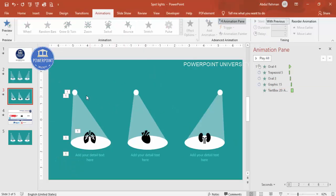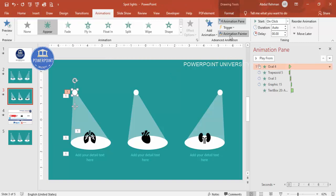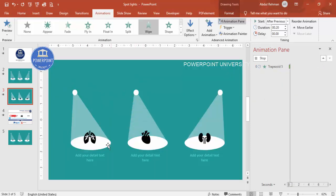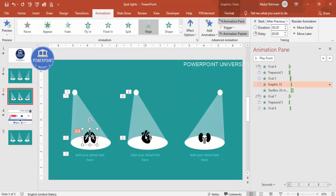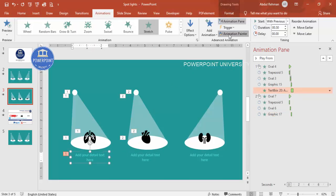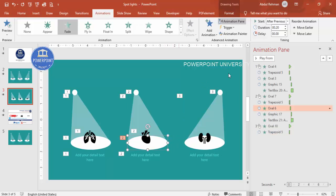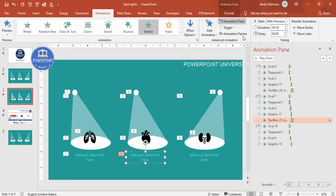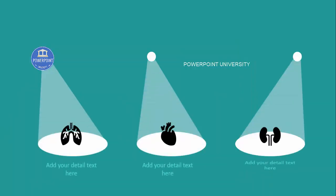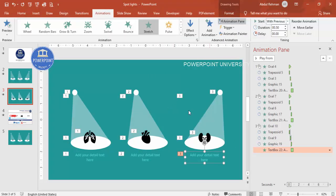Now it's easy to copy the animations to the other spotlights using the Animation Painter. Select the first animated element, click Animation Painter, then click the corresponding element on the next spotlight — the light, the oval, the icon, and the text. Do the same for the third spotlight. Now let me play it — you can see it works, and that's a very easy and simple way to create this animation effect.